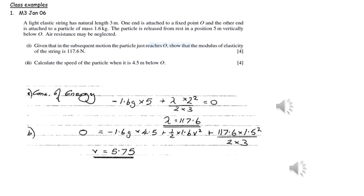That's why we have zero on one side of the equation. On the opposite side, the original KE is zero, the gravitational potential energy is going to be negative because it's below our arbitrary PE level, so that's why it's negative mg times h. We also have the elastic potential energy of the string, found using λx² over 2l. This equation leads us to the fact that λ is 117.6.